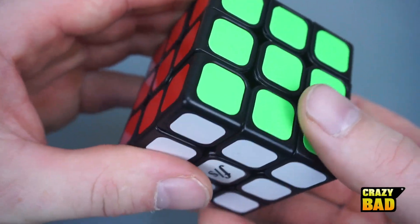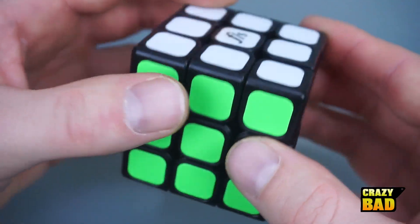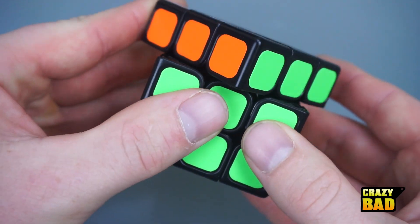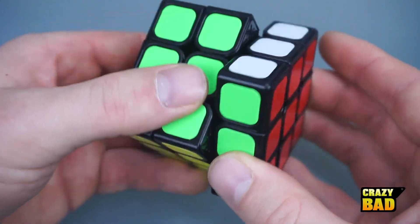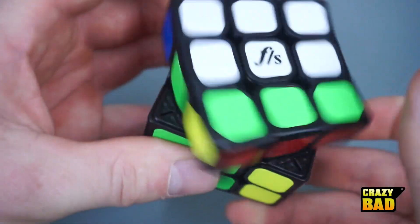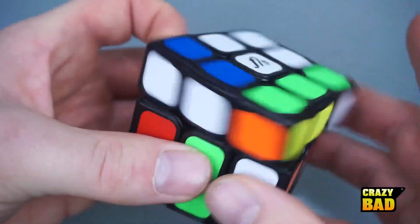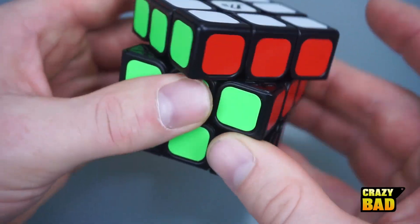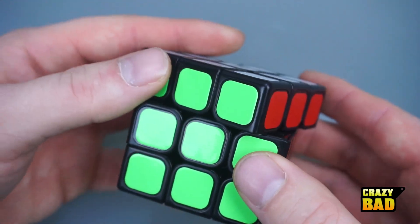It's pretty much the tensions I like it at. The corner cutting doesn't really go 45 degrees but I don't need it to go 45. I need it to go maybe about there when I'm doing my algorithms. There's no lockups, I mean sometimes if I'm going too fast, but reverse corner cutting is also very good.